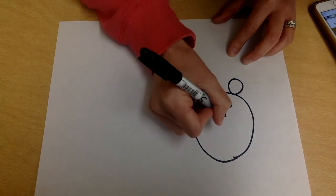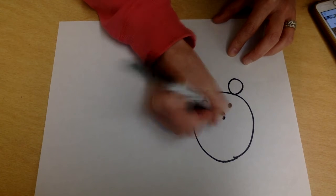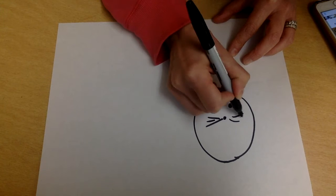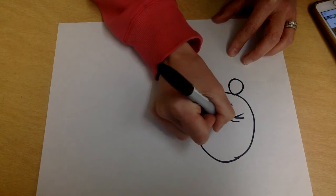Two dots for the eyes. Let's go ahead and make a dot nose, whiskers for our mouse, and a mouth.